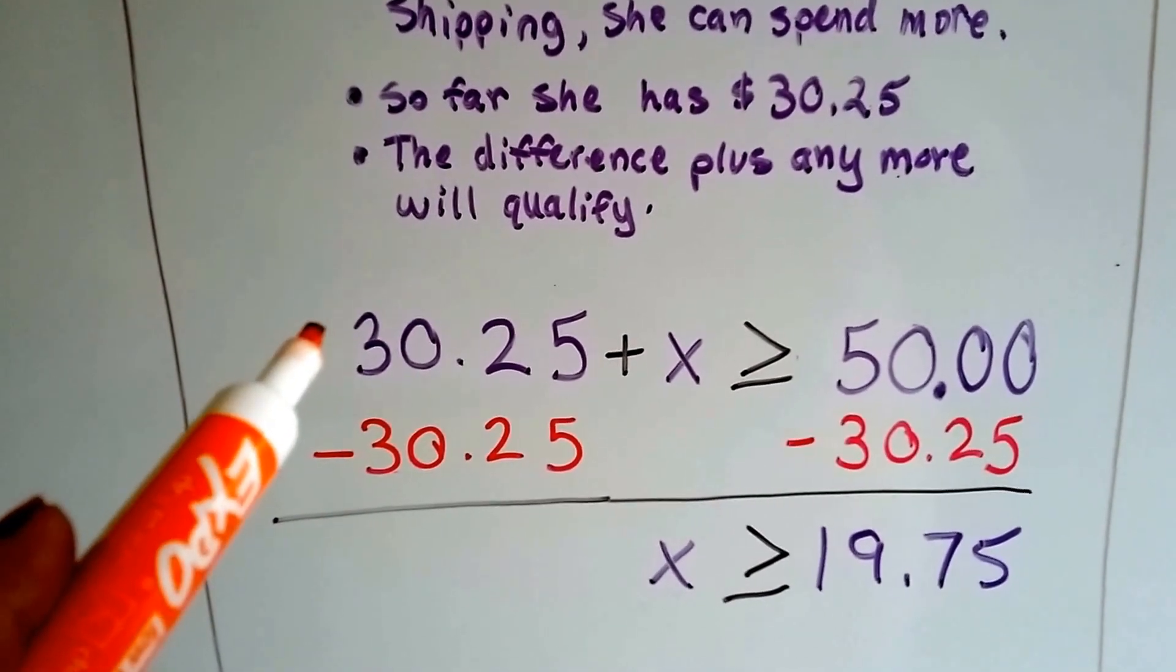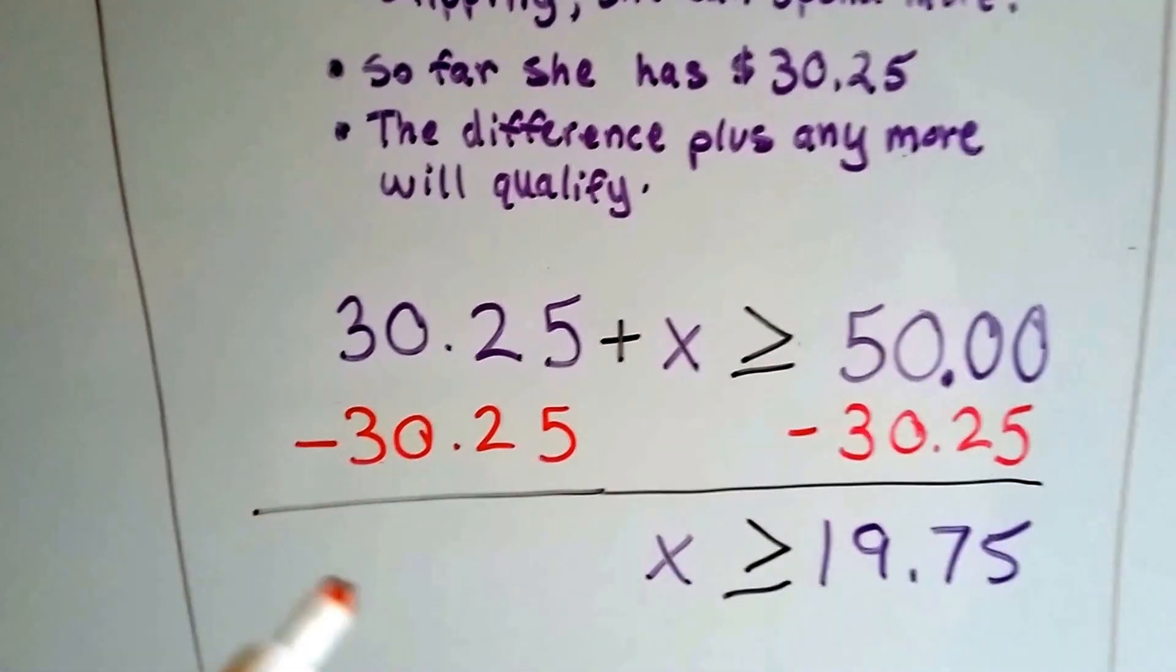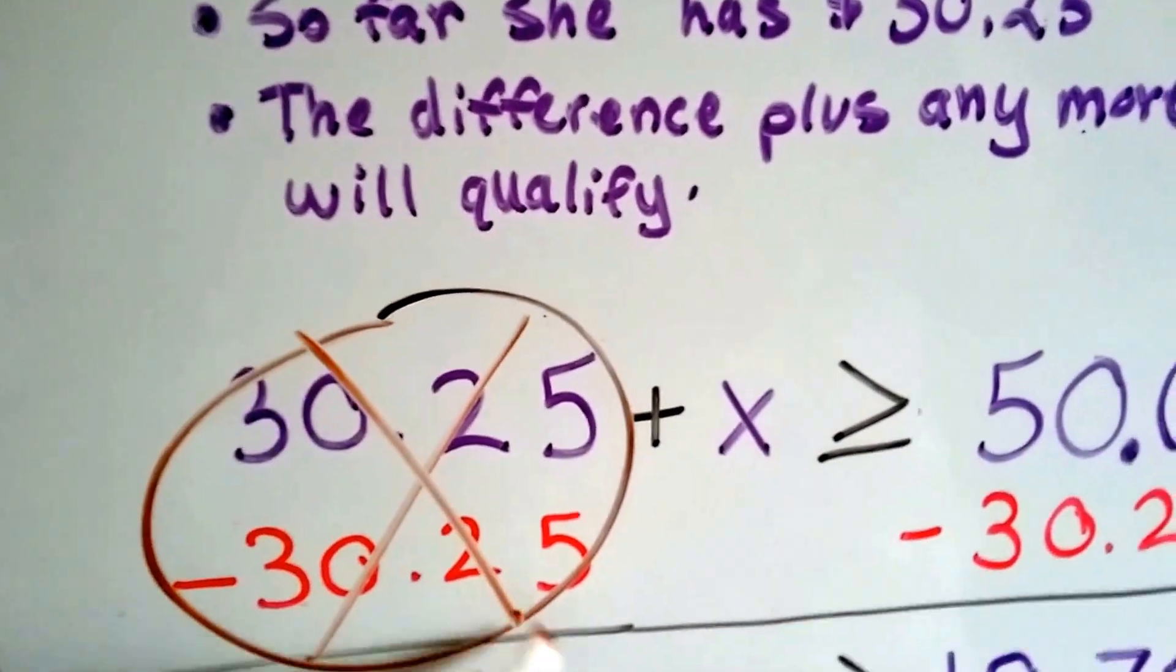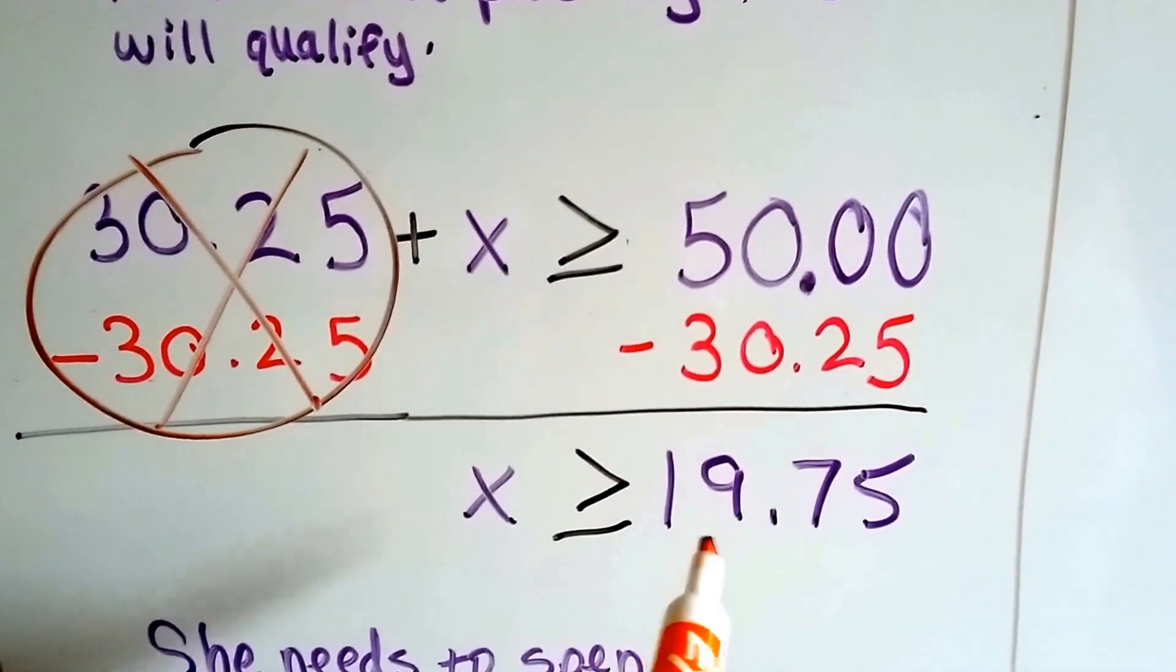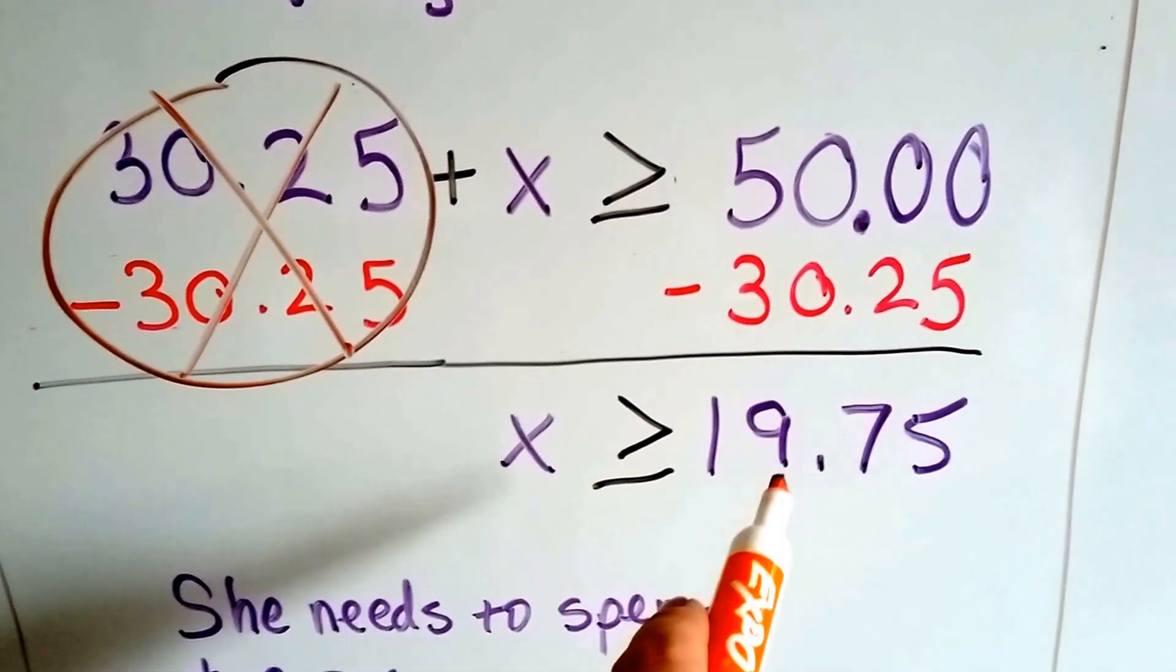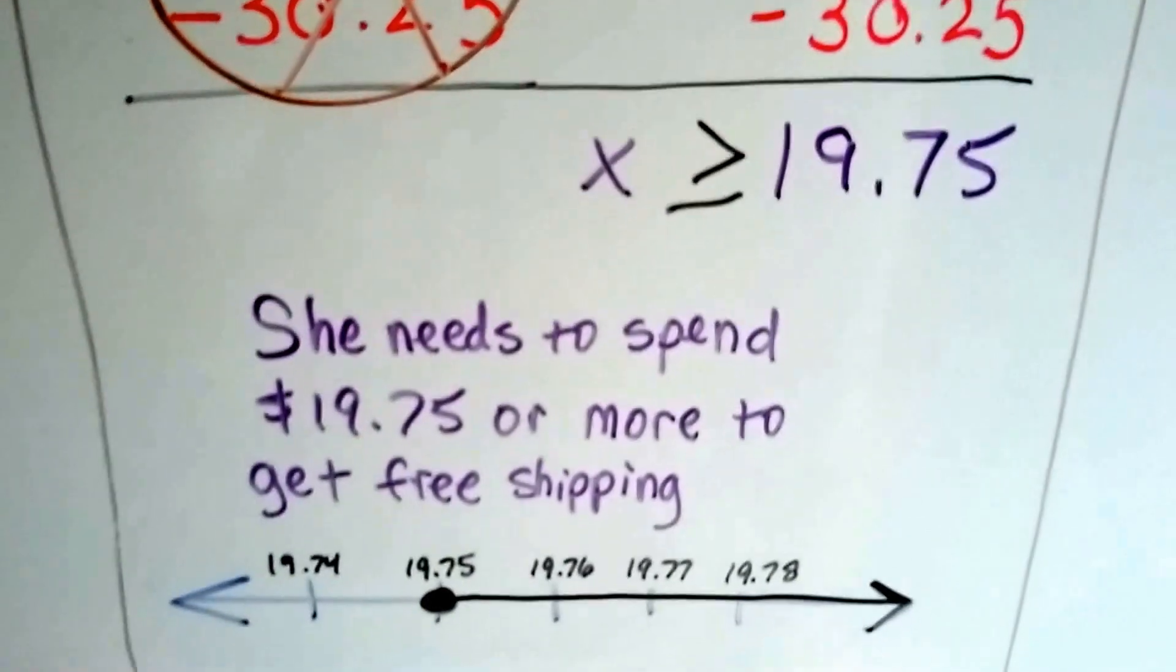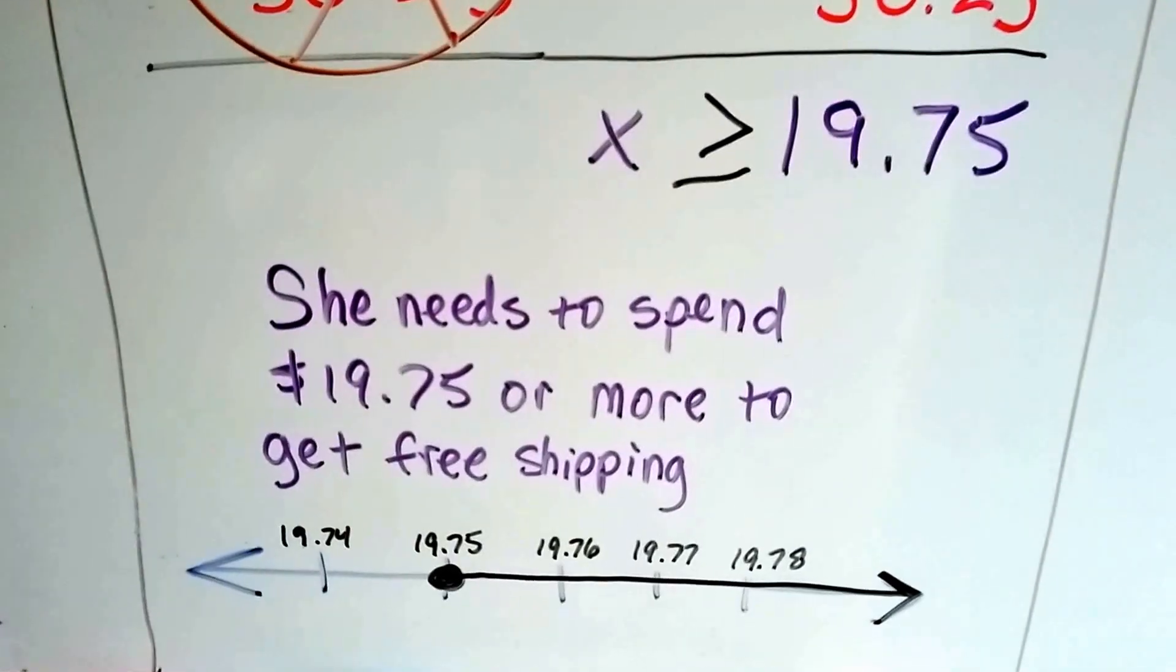Because it's a positive $30.25, we're going to subtract $30.25 from each side. That's going to create a zero pair here and it's going to eliminate it. So now we subtract the $30.25 from this side and get $19.75. That means x has got to be greater than or equal to $19.75. So we've solved it. She needs to spend $19.75 or more to get free shipping.